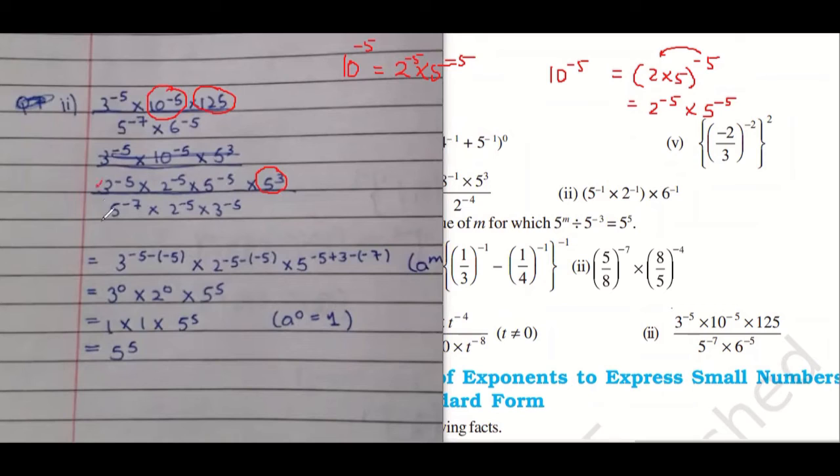Now 3 power minus 5 is same. 5 power minus 7 is same. Again, 6. 6 can be written as 2 into 3. So 2 power minus 5, 3 power minus 5. Absolutely correct.